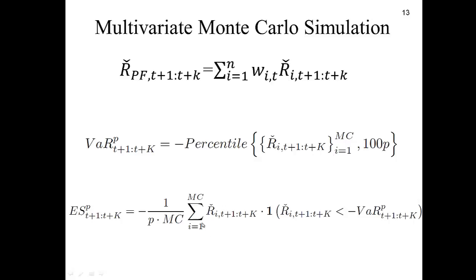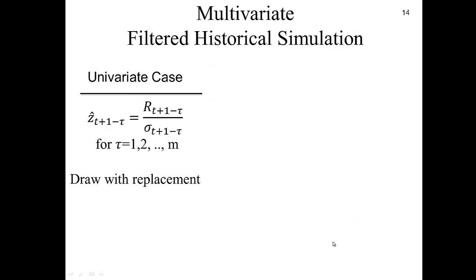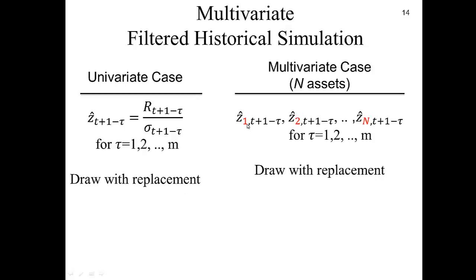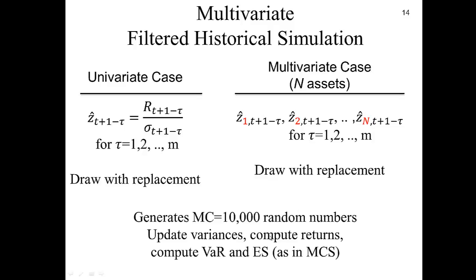Finally, the multivariate filtered historical simulation. In the univariate case, we take historical returns, standardize each by its GARCH sigma, giving about 500 standardized z's from which we draw with replacement. In the multivariate case, we have securities 1 to n — each column corresponds to a different security's standardized returns. We have 500 of these rows and draw with replacement across all of them to reprice our portfolio, generating up to 10,000 random numbers.